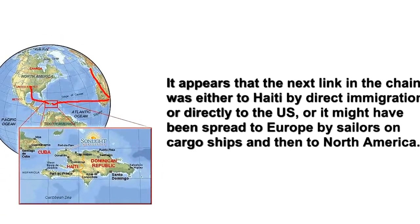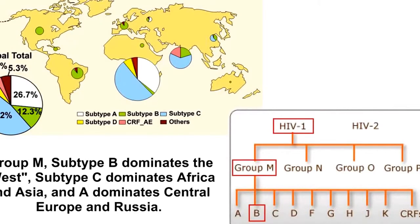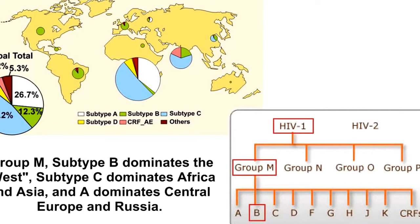It appears that the next link in the chain was either to Haiti by direct immigration, or directly to the US, or it might have been spread to Europe by sailors on cargo ships and then to North America. The data's a bit spotty, but the emergence in the major cities of Europe was slightly after the disease was documented in New York and San Francisco. Asia and Russia may have been infected by a second wave of emergence, as their subtype profiles are markedly different than the European and North American subtypes. South America, Australia, and Northwest Asia are a possible third wave emergence.